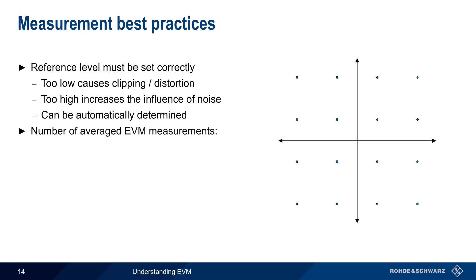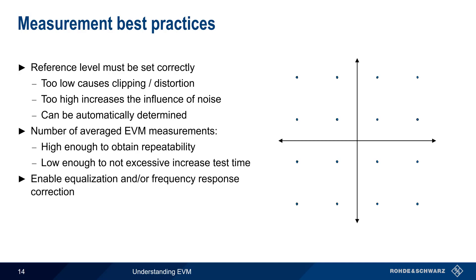Another important consideration is the number of averaged EVM measurements. Recall that EVM is computed on a per-symbol basis, so we average EVM results over multiple measurements. The number of averages should be high enough to guarantee stable, repeatable results, but keep in mind that a large number of averages may lead to an excessively long test time. Enabling equalization and/or frequency response correction is also recommended. And, if a vector signal generator is being used to provide a modulated input to the device under test, it's usually a good idea to have both the generator and the analyzer share a common frequency reference.